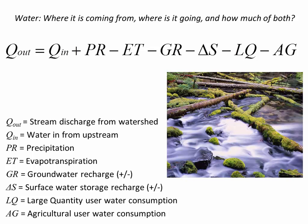In Q = CIA, we assume no change in surface water storage, meaning it applies to a small watershed without a pond. It also neglects water use by large quantity users or agricultural uses, and assumes no flow coming into the watershed. The rational method is one way to estimate where water comes from and how much there is, but we can do better — we'll look at more sophisticated and realistic ways of modeling runoff.